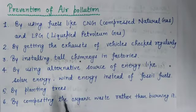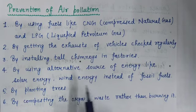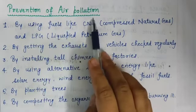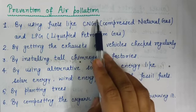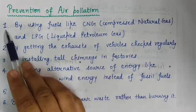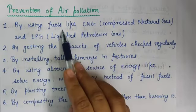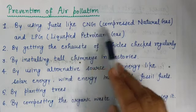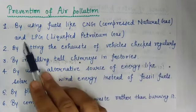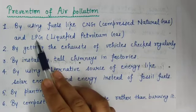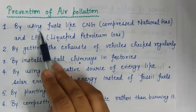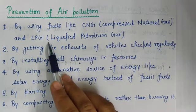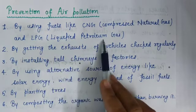Now, the question is how can we prevent the air from getting polluted. Air pollution can be reduced to a great extent in the following ways. First is by using clean fuels like CNG — compressed natural gas — and LPG, which stands for liquefied petroleum gas, in vehicles. By using these clean fuels we can prevent our air from getting polluted.